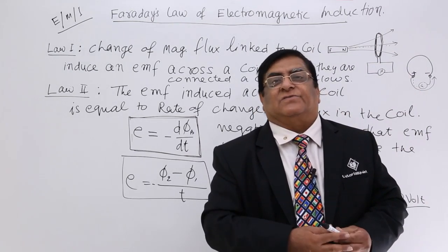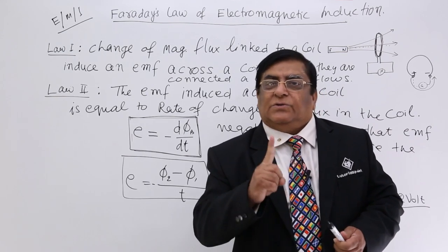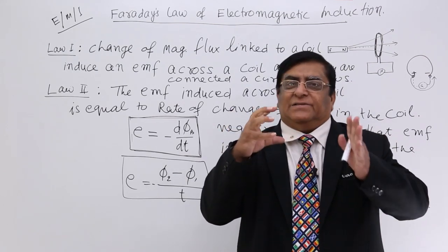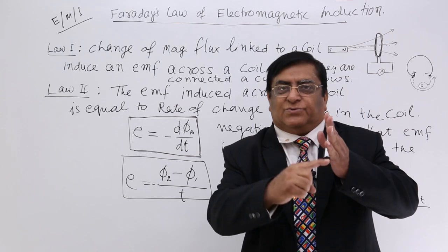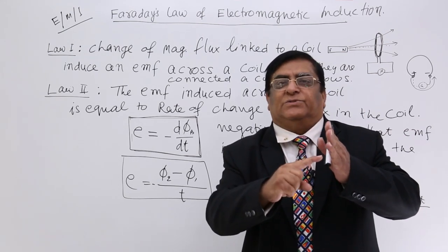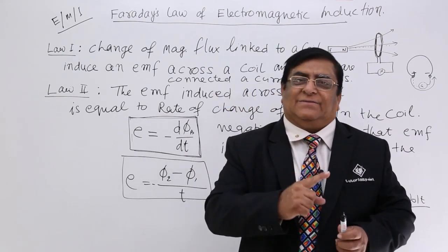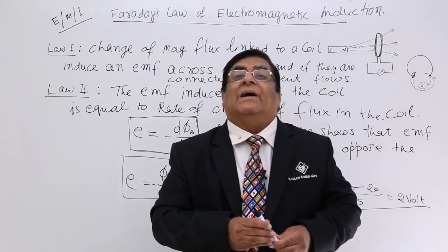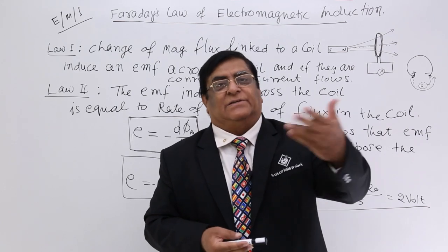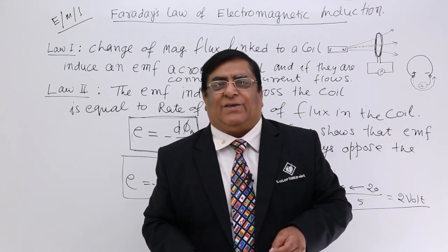In the next lecture we will study Lenz's law, which is also very important. The first law we have done is Faraday's law: whenever there is a change in the flux linked to a coil, an EMF is induced, and with a closed circuit, current starts flowing. This is how we can get the EMF and the current. If you go to energy, we will discuss in the next lecture what the energy implications are in this. Thank you.